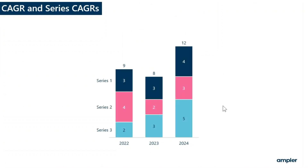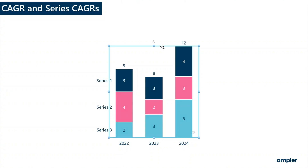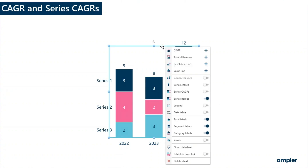AmpliCharts allows you to add a kegger to your chart to show the compounded annual growth rate. To insert a kegger, right click on the chart and select kegger from the context menu.